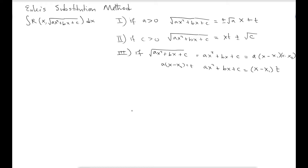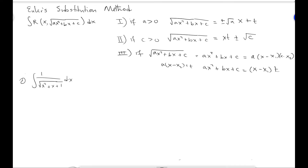Let us solve a question using these conditions. Our first example: the integral of 1 over √(x² + x + 1) dx. First, we can tell that a equals 1, which is greater than zero. So we use the first case and replace √(x² + x + 1) with √a · (x + t), which here is just (x + t) since a equals 1.